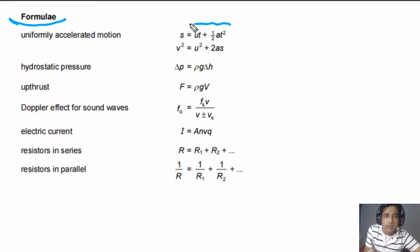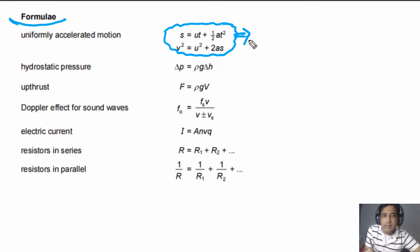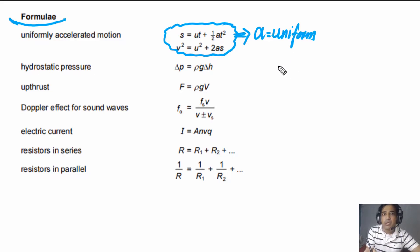The first set of formulae is for uniform accelerated motion. You can only use these equations when acceleration is constant — meaning A is uniform. This is a very important point: these equations apply only when the value of A is constant.